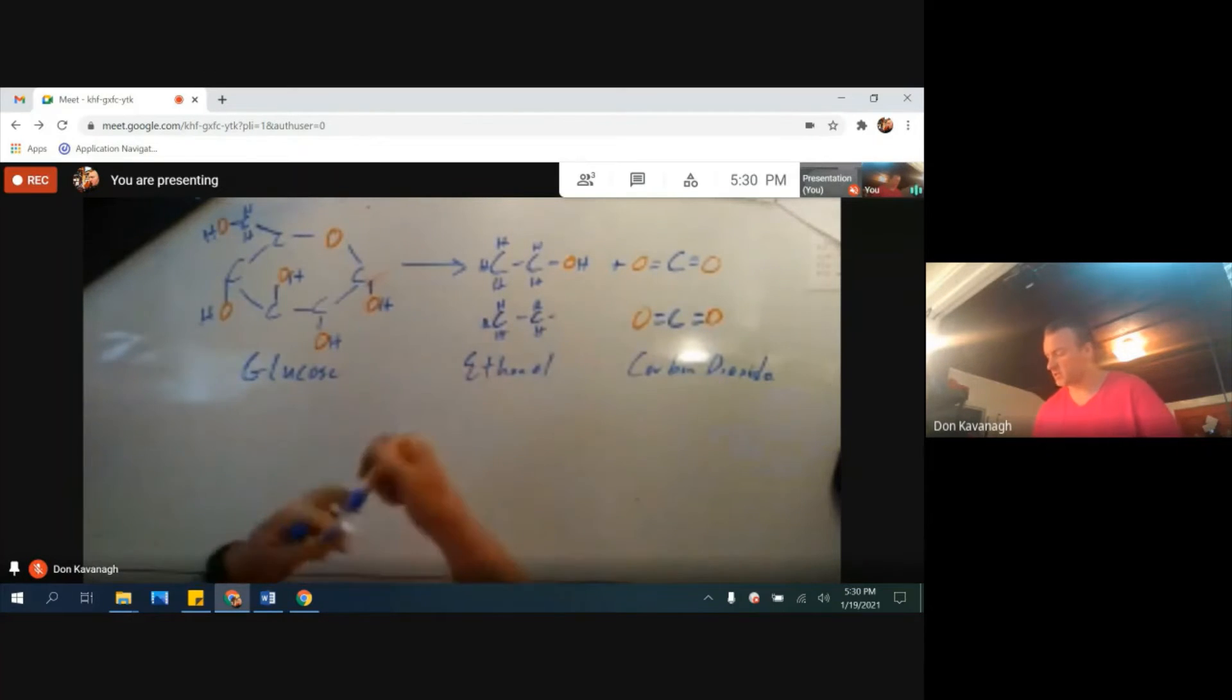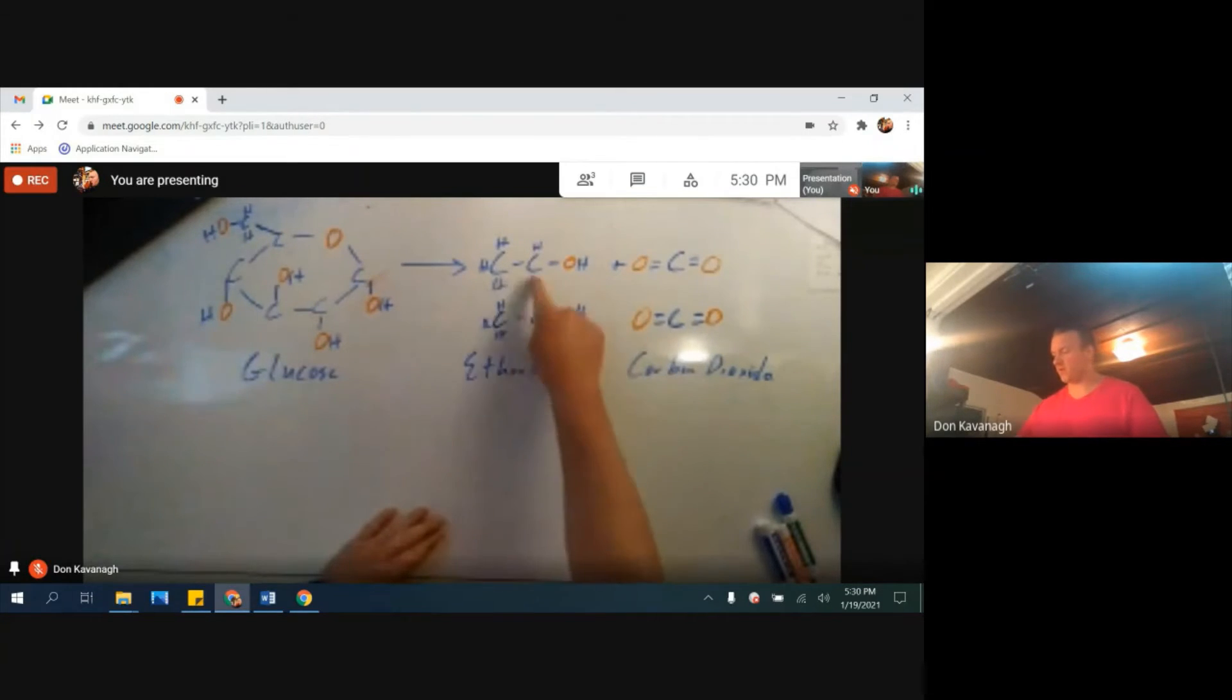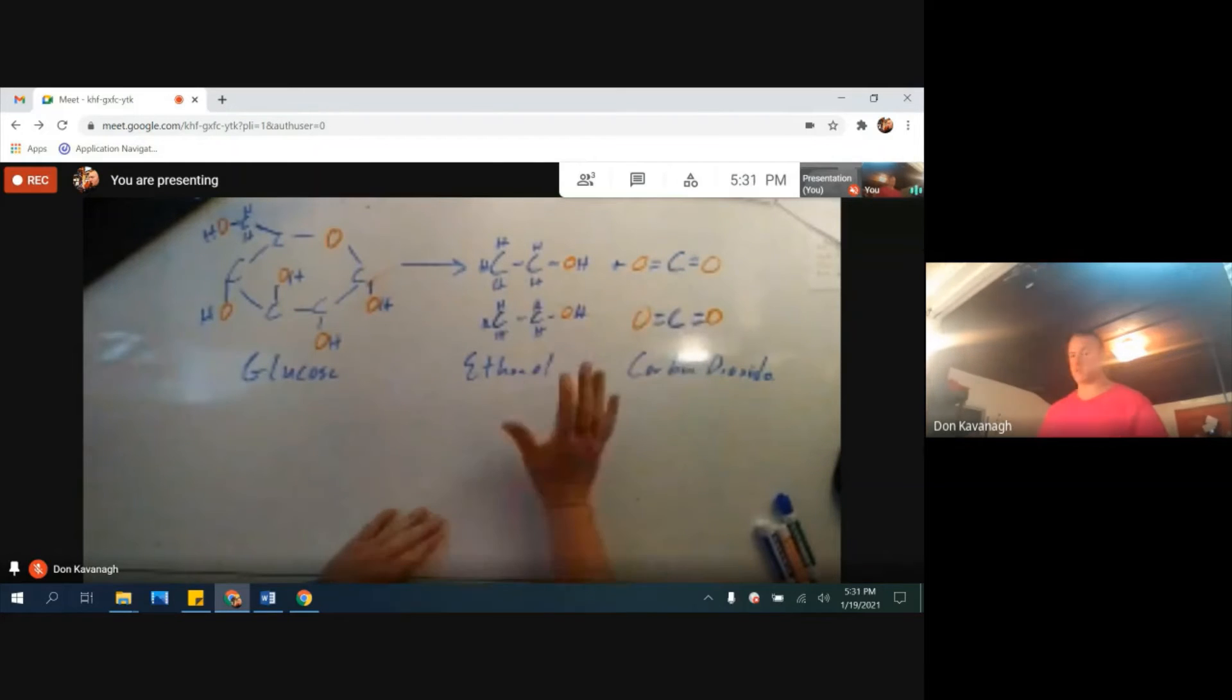And we're just going to pay attention to the carbons and oxygens. The counting will also work for the hydrogens, but it's just getting a little busy right here. We're just keeping it simple. We started with six carbons over here. Over here we have one, two, three, four, five, six. Arranged differently, but still six to six.